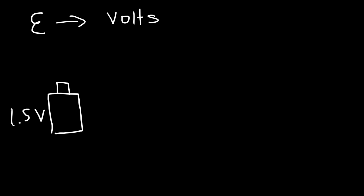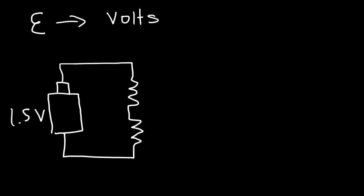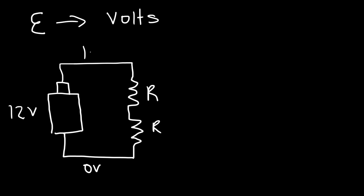Another way to think about EMF is that it causes current to flow from a low potential to a high potential. Consider this circuit with two equal resistors and a 12-volt source. The voltage at the bottom will be 0, at the top it's 12, and in between it's 6. In a circuit, current flows from a high potential to a low potential.